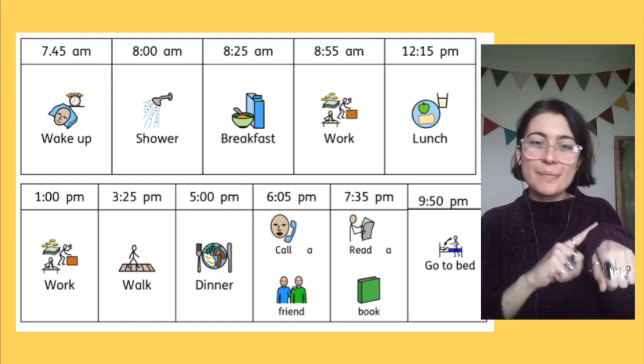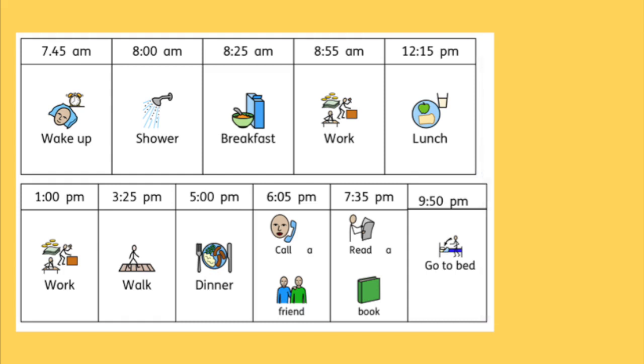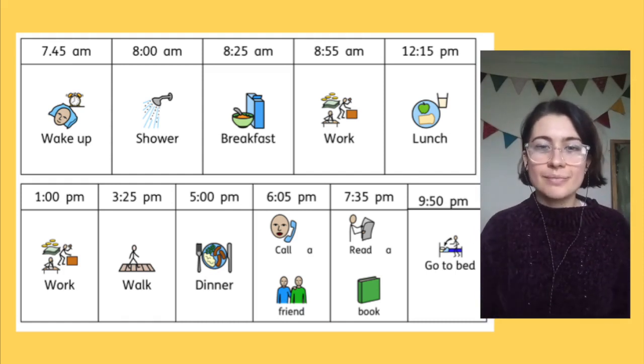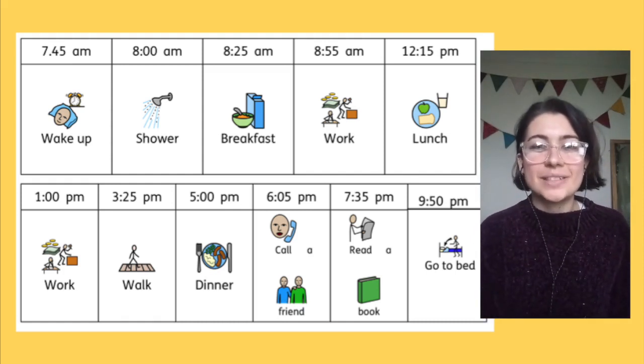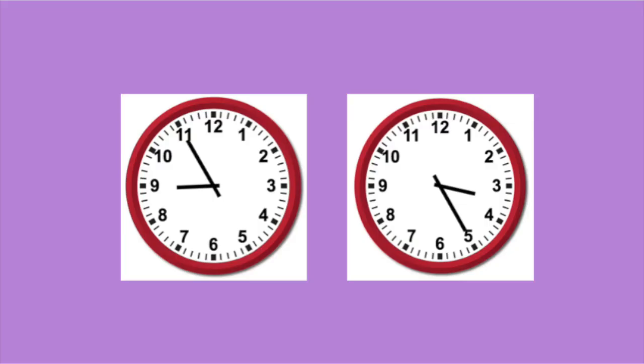What time do I go for a walk? Have a look. I go for a walk at 3.25. But what does 3.25 look like on the clock? Can you show me? Which one says 3.25? Pause the video now if you need more time to think. It's this one.